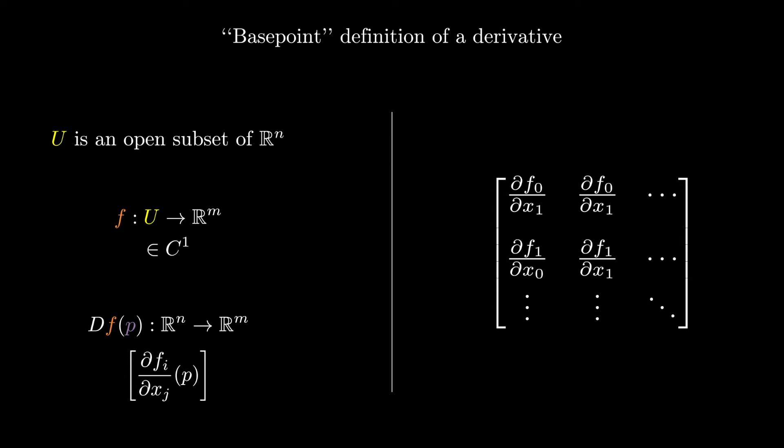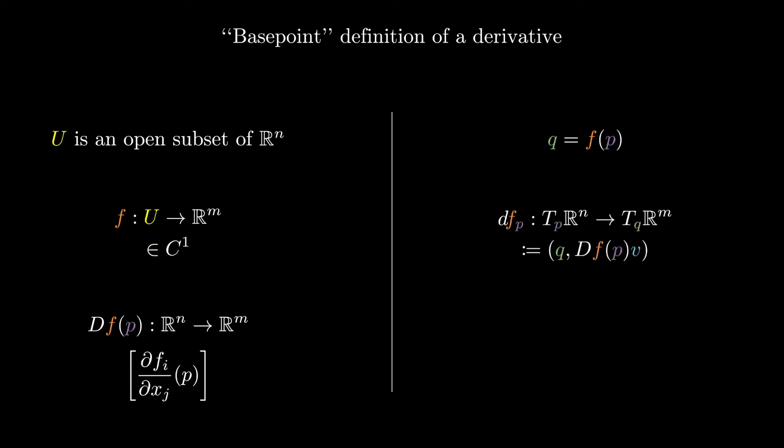Finally, we can define a base point version of a derivative. We will use a lowercase d instead of an uppercase one to differentiate these. Suppose we want to change base points, and suppose q equals f(p), then the derivative dfp is a map from TpRn to TqRm, defined to be the following.